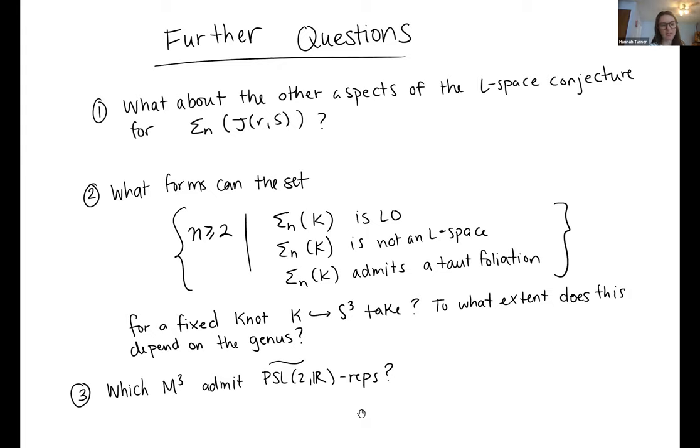Another question you could ask is, let's say I fix a knot. I look at its branch covers. I can look at all of them from N equal 2 up as high as I want. I check, is it left orderable or not, yes or no. I collect all the yeses. That's a subset of the integers bigger than or equal to 2. What does it look like? Is it a consecutive set of integers? Does it depend on the genus? My results kind of indicate maybe yes, but it's a very specific case, so we don't really know.